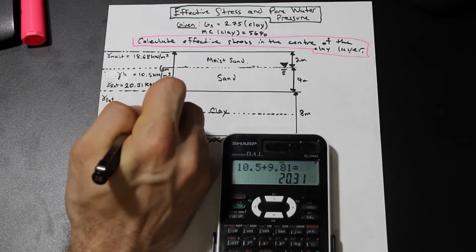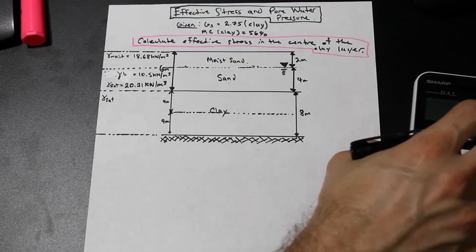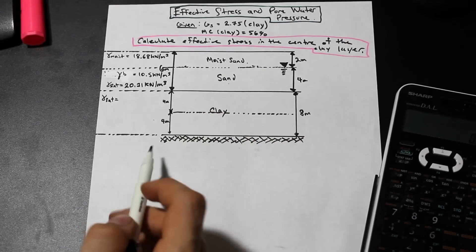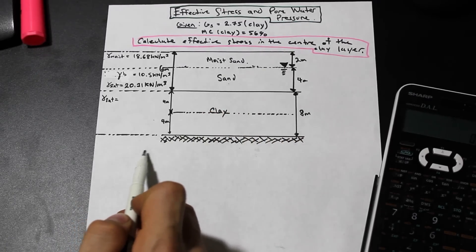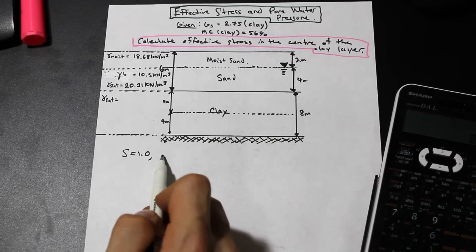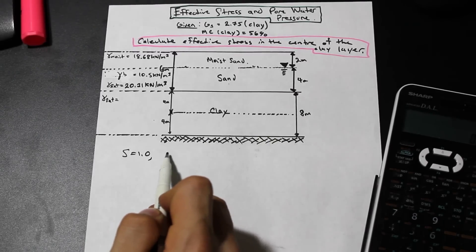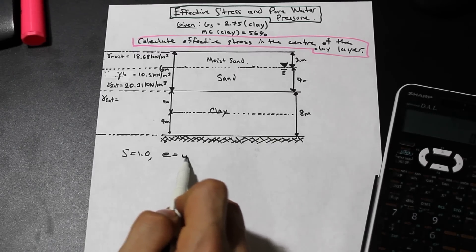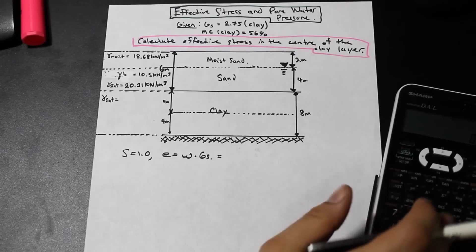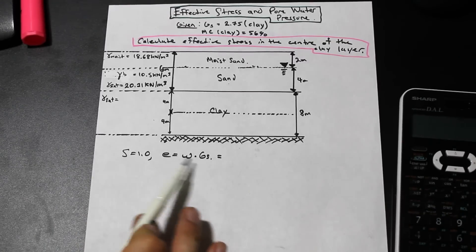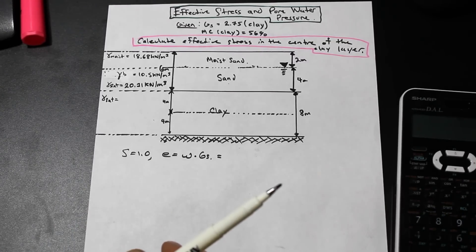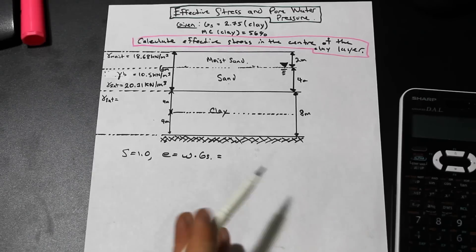So this is always the first step when you're finding effective stresses is find the unit weights that you need. Now let's find the gamma saturated for the clay. We're going to need to use a couple formulas. So when this degree of saturation is equal to 1, that's an assumption that we're going to make here because we're not given, the void ratio is equal to the water content times the specific gravity. That's a formula. So you'll notice in these geotechnical courses, there's tons of little formulas like this, tons of little formulas.